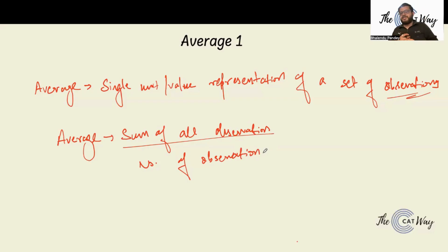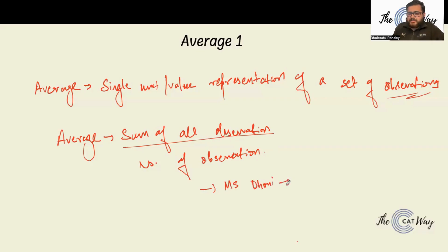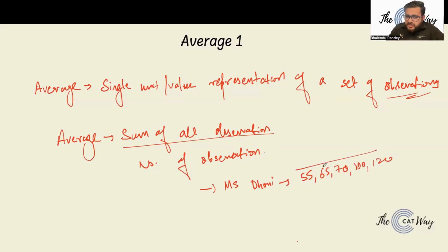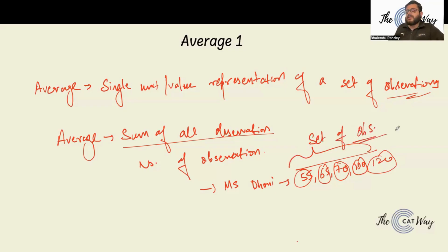Let's say MS Dhoni played five matches and his scores were 55, 65, 70, 100, and 120. These are individual observations, and together they form a set of observations.